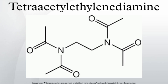Use in laundry detergents and mechanism of action: TAED is an important component of laundry detergents and bleaches, where it is used as an activator for active oxygen bleaching agents. Active oxygen bleaching agents include sodium perborate, sodium percarbonate, sodium perphosphate, sodium persulfate, and urea peroxide. These compounds release hydrogen peroxide during the wash cycle.